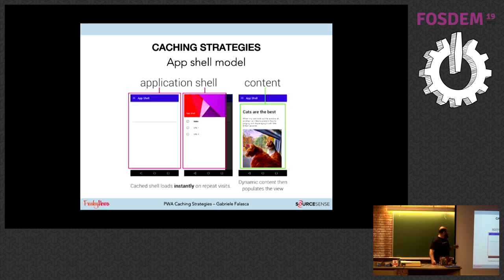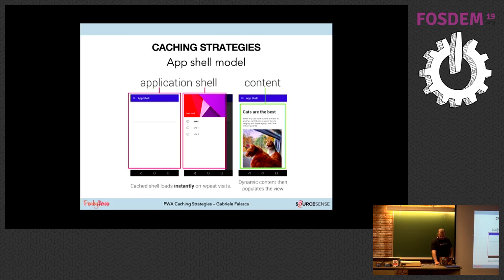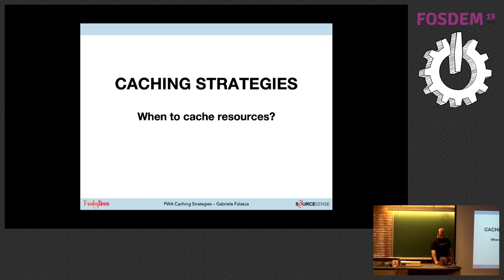The first strategy for caching in Progressive Web Apps is the App Shell model. You have to separate the application shell — all the scaffolding part of the application — from the dynamic content. In this way, when you start the application, you can immediately cache the application shell and then fetch the content dynamically.